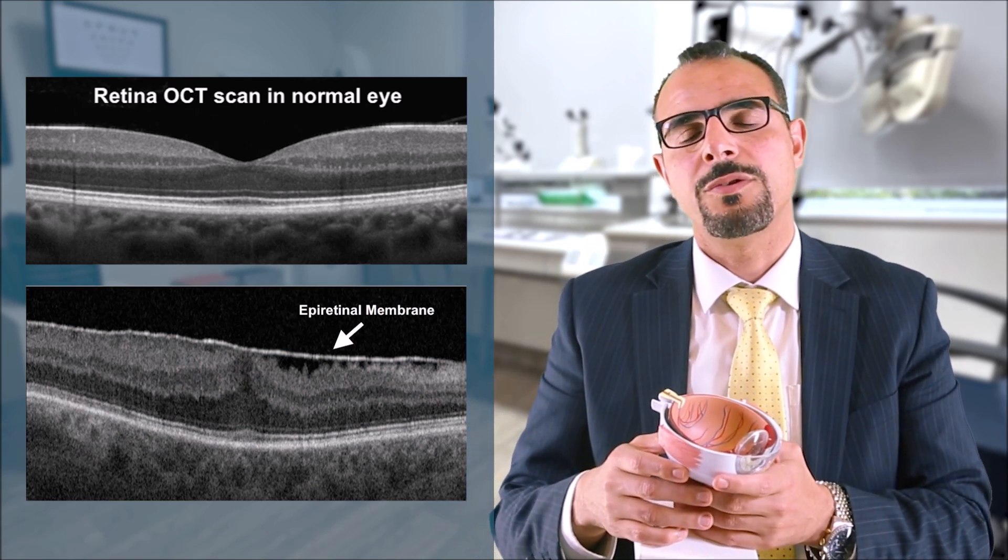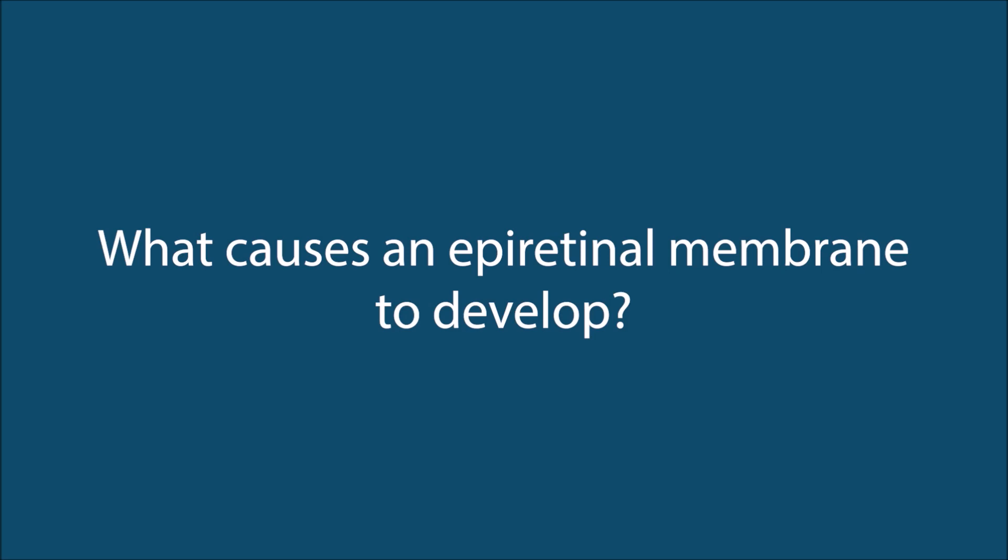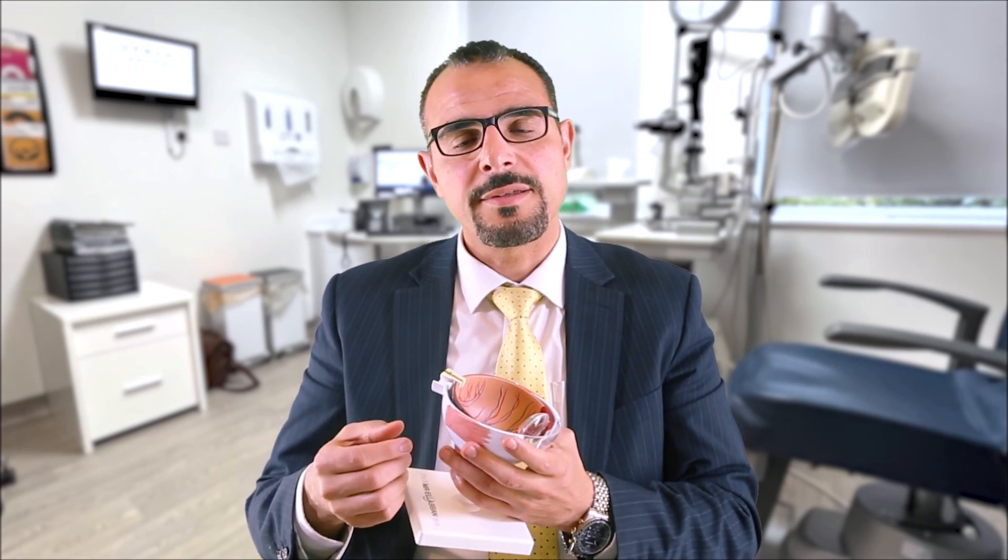These membranes can grow into different shapes and usually build up over time. The exact cause of epiretinal membrane is unknown. However, normally in our eyes we have a gel filling the back of the eye called the vitreous. This gel usually breaks up over time to the point where it starts to separate from the back of the eye — a condition called posterior vitreous separation or detachment — and for unknown reasons, this may irritate the retinal surface, leading to the buildup of the membrane.